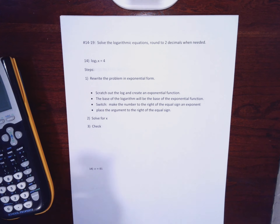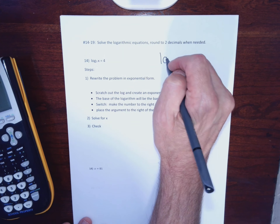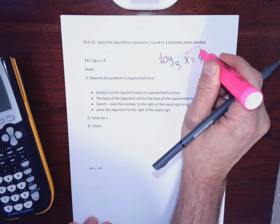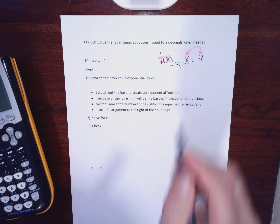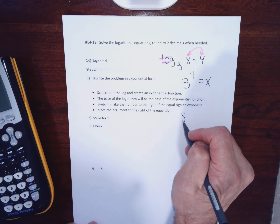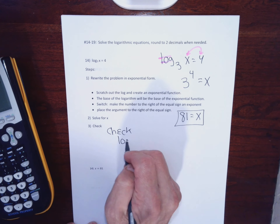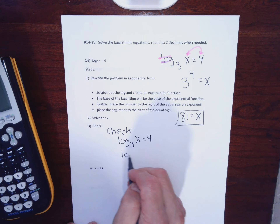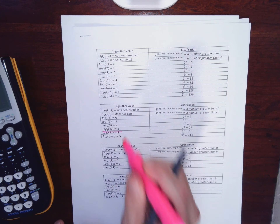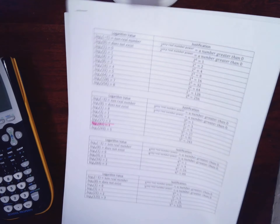The next few problems I'm going to check using the tables you're allowed to use on the test. For each one of these problems, they start off with a log and I need to get rid of it. To get rid of a log, I cross it out, switch the x and the 4, and create an exponential equation. The 3 is the base, the 4 becomes the exponent, and x is freed up. 3 to the 4th is 81. Now checking using the table: log base 3 of 81 equals 4, so the left-hand side equals 4. You can find this handout under the chapter 6 problems.